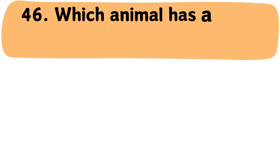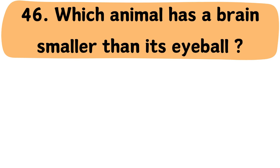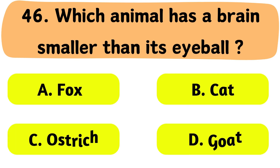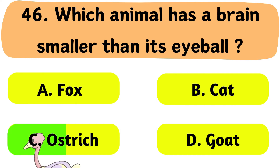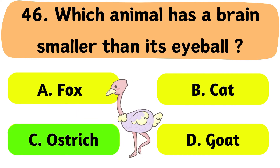Question No. 46: Which animal has a brain smaller than its eyeball? A. Fox. B. Cat. C. Ostrich. D. Goat. The correct answer is Option C: Ostrich.